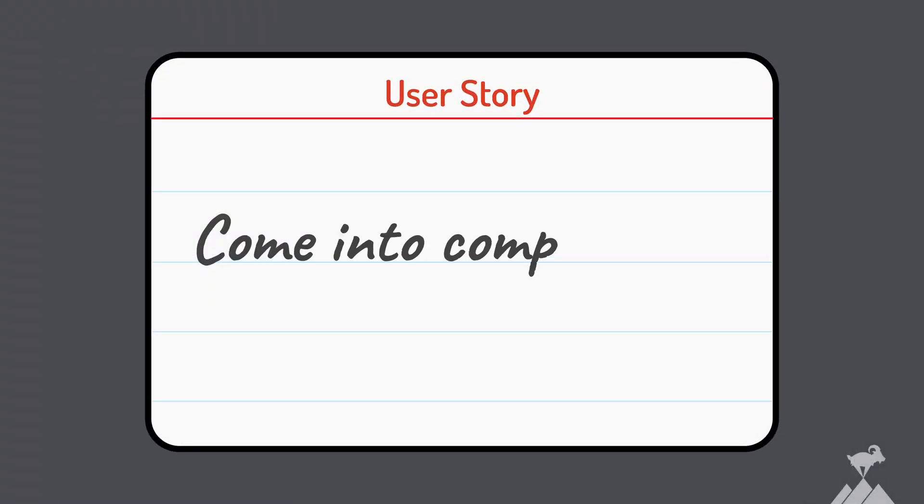Slow performance, security issues, failing to support a browser — you name it. Here's a better way to handle them. Start by creating a user story to come into compliance. Then, once you've got it working, add that requirement to your definition of done so you stay in compliance.